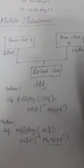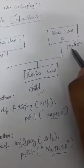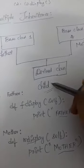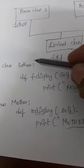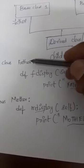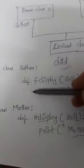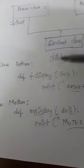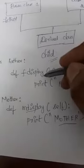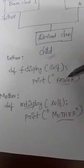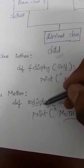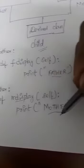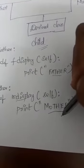You need to create three classes: one class for father, one class for mother, and one class for child. I am creating two classes here — the father class and the mother class. Inside the father class I am writing a method called f_display, printing 'father'. Inside the mother class I am writing a method called m_display, printing 'mother'.